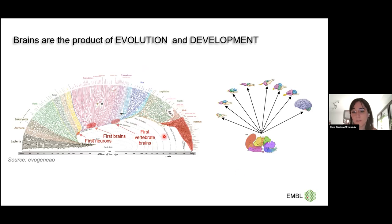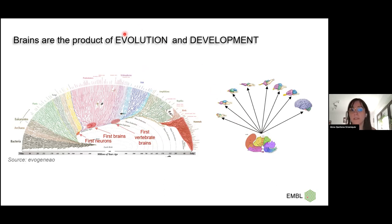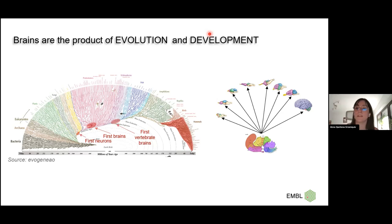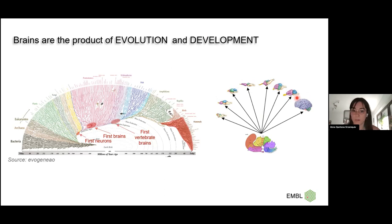Evolution acts on developmental programs, and development tends to be quite conserved across species, which makes comparisons much easier. I would argue that both the study of evolution and development are key to understanding the brain. I am studying the development of the brain of a shark to understand the early evolution of vertebrate brains, and in particular I'm studying the telencephalon — which in humans gives rise to the cerebral cortex, neocortex, basal ganglia, and so on.